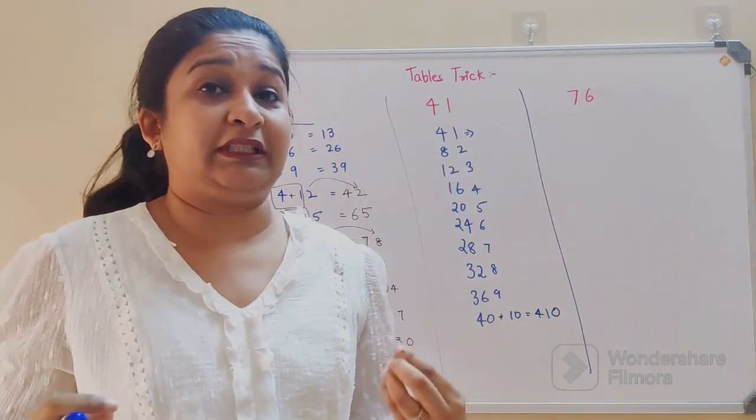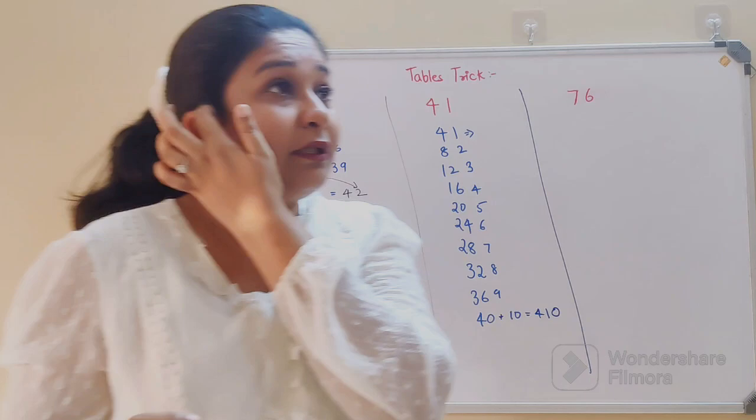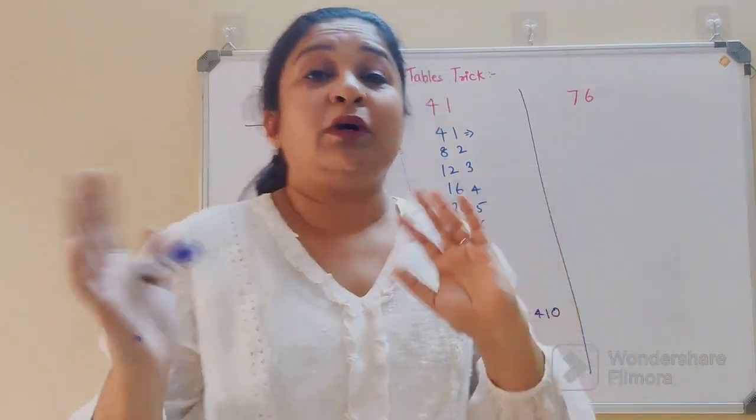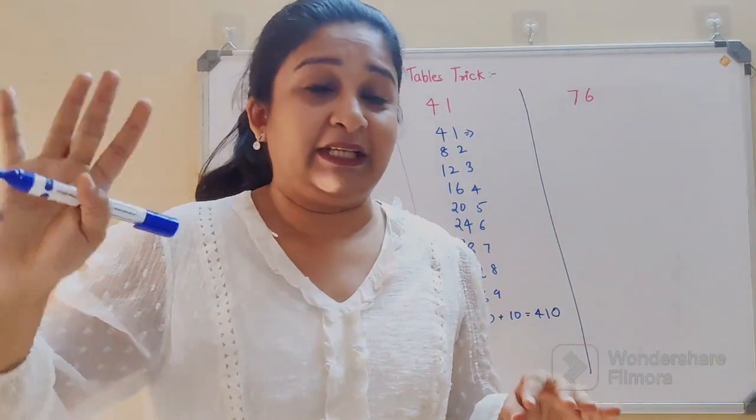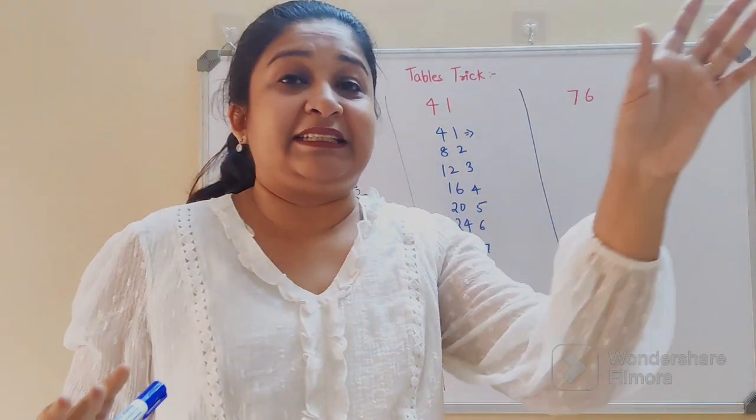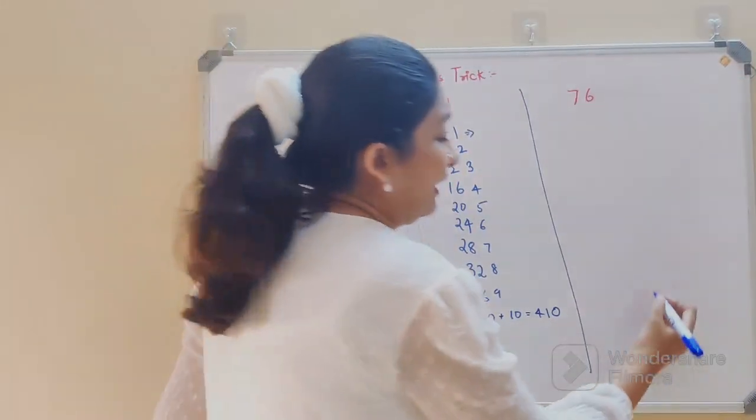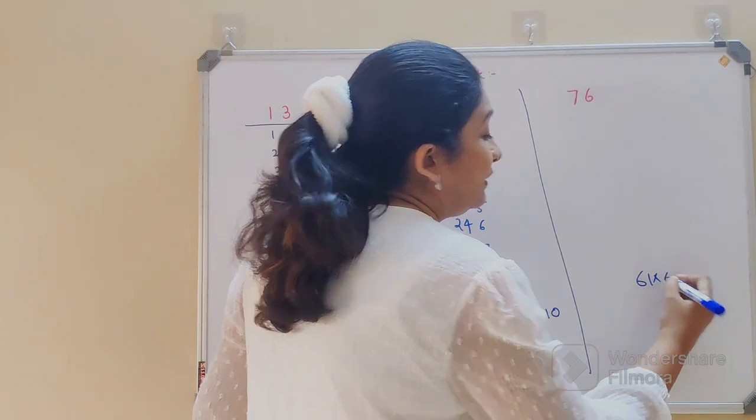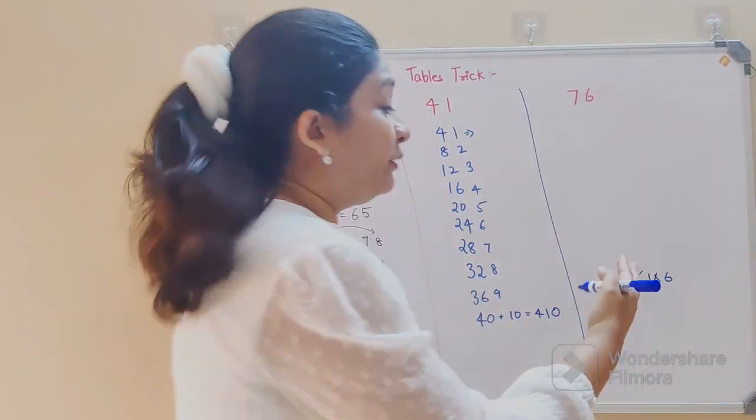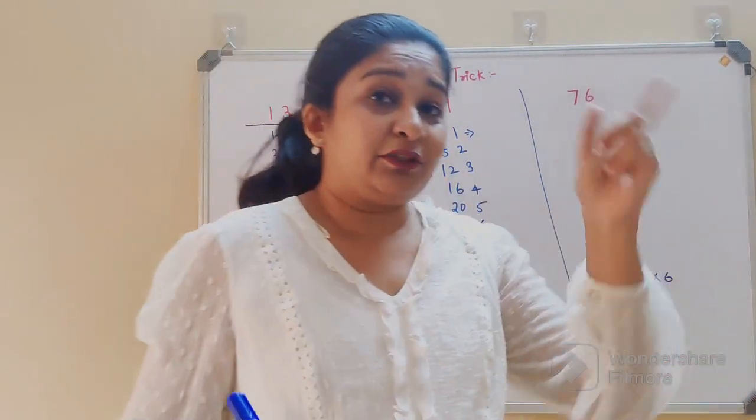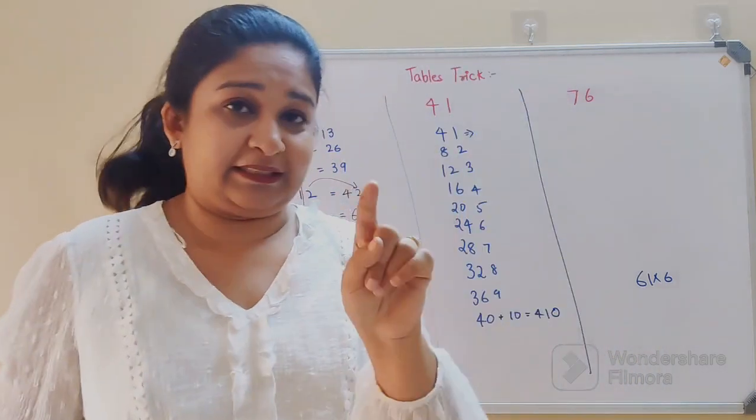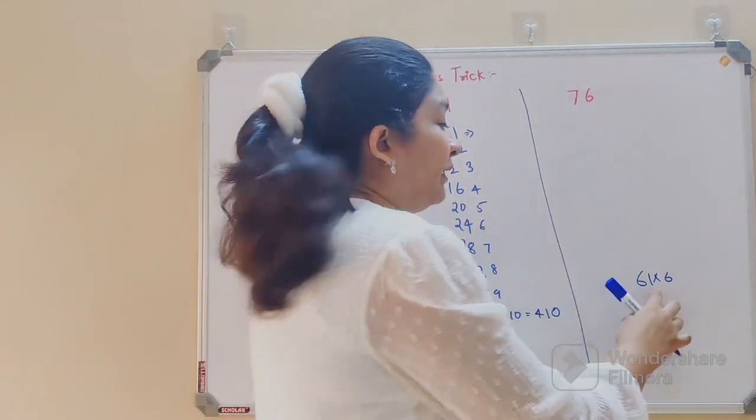Let's say if we had to do 61 into 6. Now what you have to do is you don't have to worry about the 1 part. What you have to do is just 6 and 6 because of the 60 in 61. If we had to do 61 into 6, someone asks you, what you will do is just multiply 6 and 6, that gets you 36.